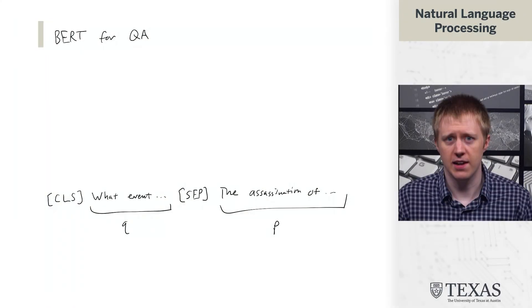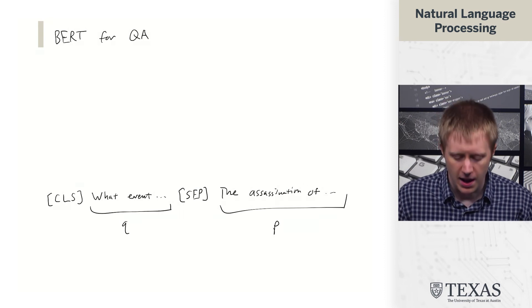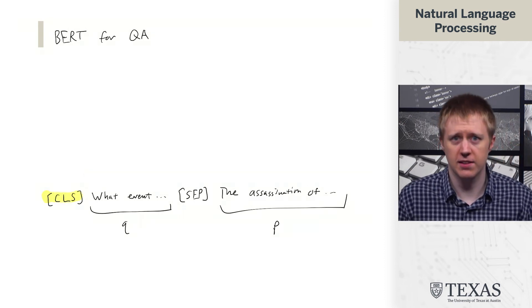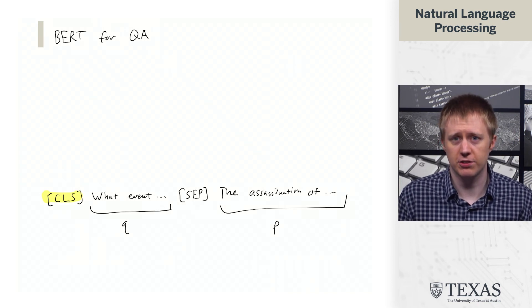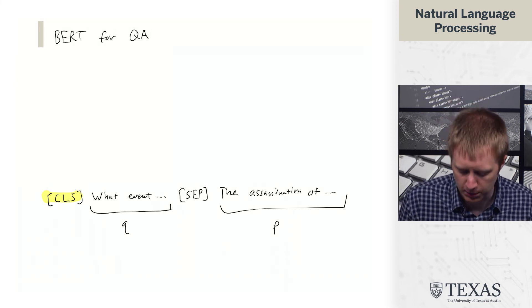In this segment we're going to talk about how BERT can be applied to question answering. This won't take very long because the solution is relatively straightforward. What we've got here is a question and a corresponding passage that are formatted for input to BERT. The changes we've made include appending the CLS token, which we are not going to use but is still expected by BERT as part of the input.